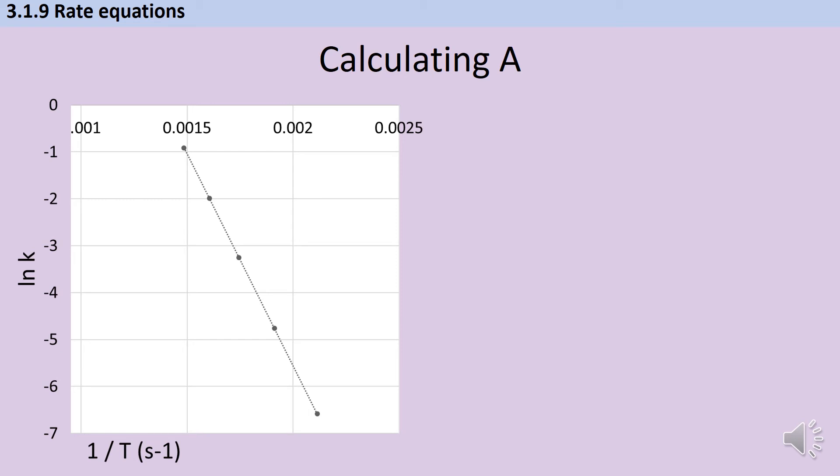But unfortunately, with the scale I've drawn this, my graph is not going to cross the y-axis. And although I could make my graph much smaller to allow me to extrapolate it loads and loads, that's not really going to be accurate. So I need an algebraic way of handling this. If I go back to my rearranged version of the Arrhenius equation, then I can see that actually I already have all of these terms.